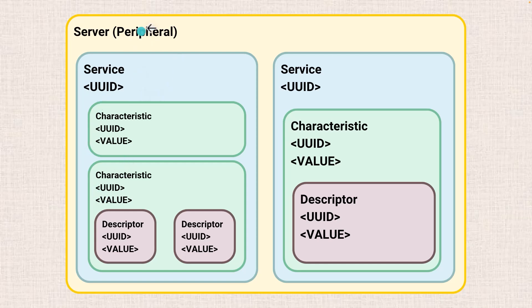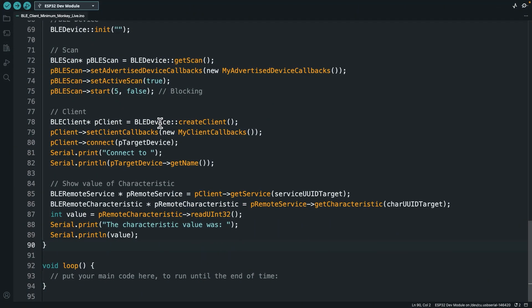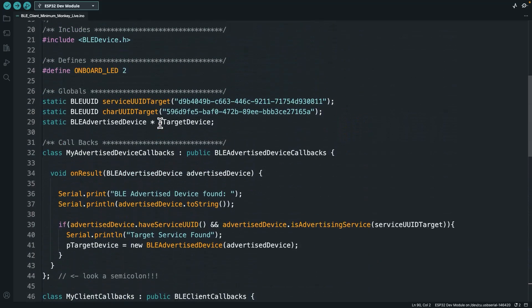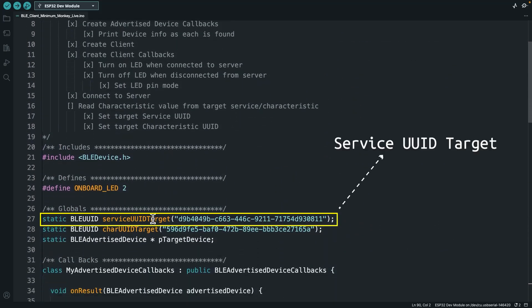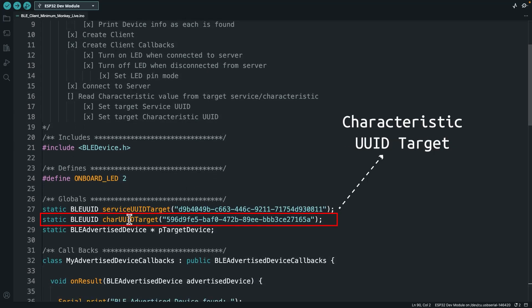Once we've got a handle on that service, we say which characteristic in that service we want. There might only be one service, but you still need to say which one you want, and then you grab the characteristic of interest. At the very top of our code we said this is the service UUID target and this is the characteristic target we're interested in.